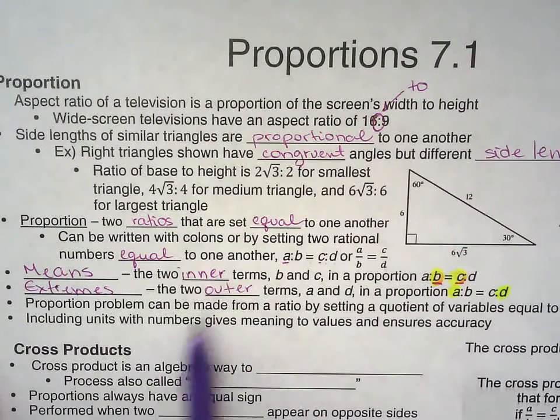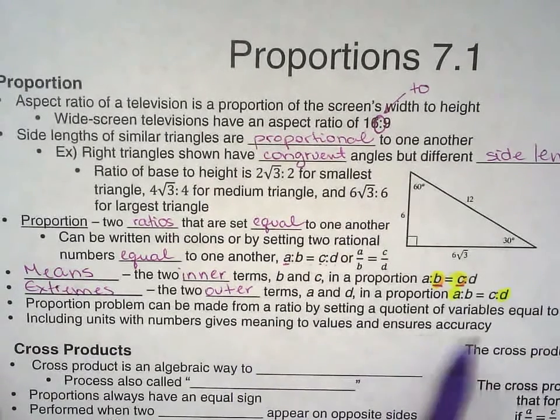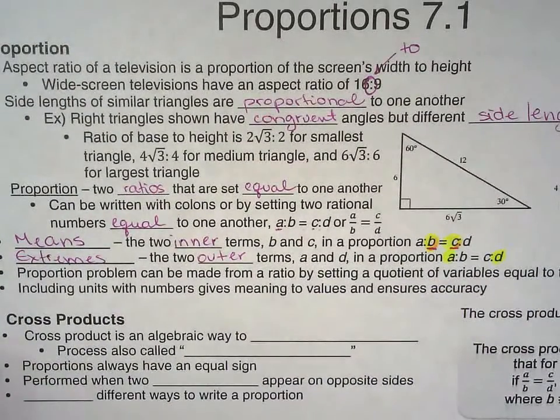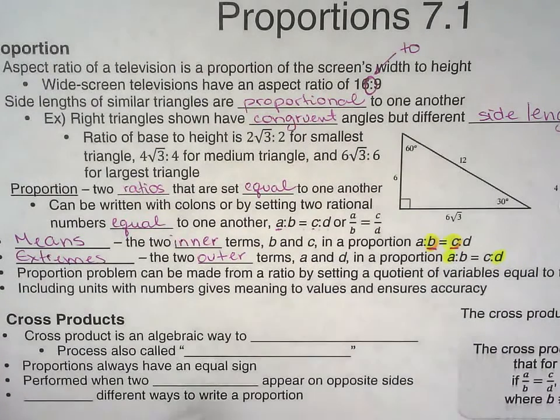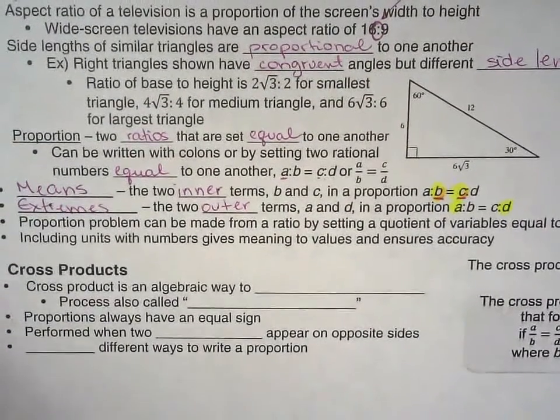And why is it important to include units? It gives meaning and ensures accuracy. In chemistry right now, you're doing stoichiometry, and I know you have to use the units and everything to make sure that you ended up with the right answer in the right unit.